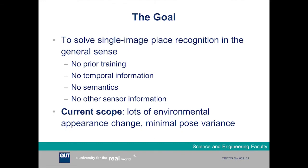The goal of this work is to solve single image place recognition in the general sense — without the benefit of prior training, without using temporal information such as sequences of images, without using semantics, and without using multi-sensor information. Obviously for any application we would like to make use of these other information sources, but here we're just trying to solve the pure place recognition problem as well as we can.